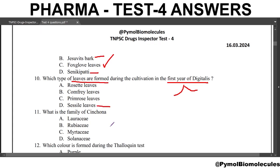Next question: what is the family of Cinchona? Lauraceae is for Cinnamon. Rubiaceae is the correct answer. Myrtaceae is for clove. And Solanaceae is for Solanum khasianum.